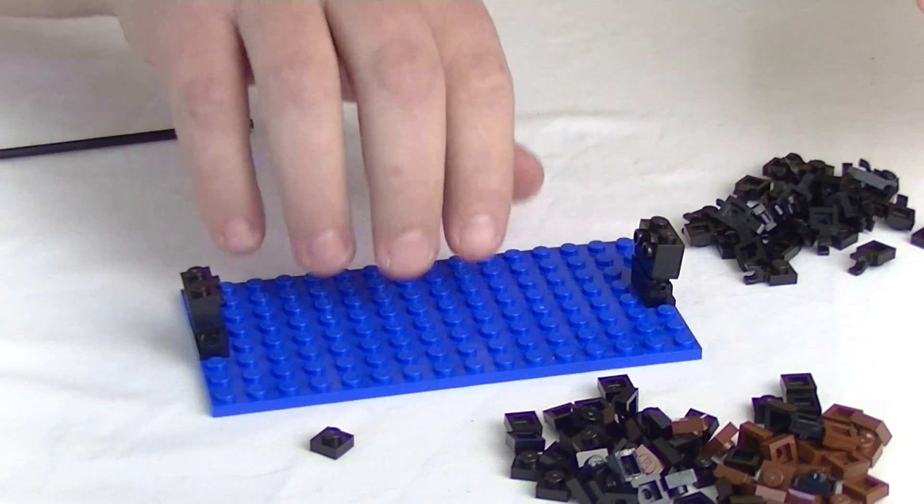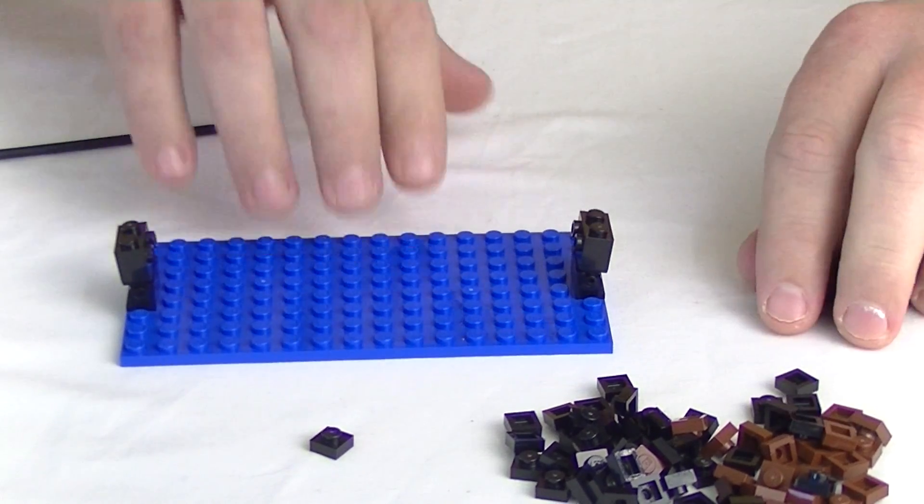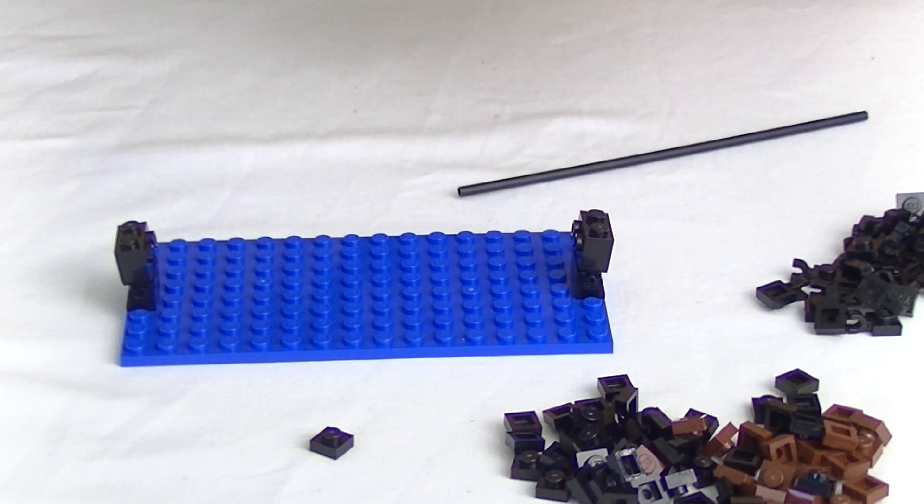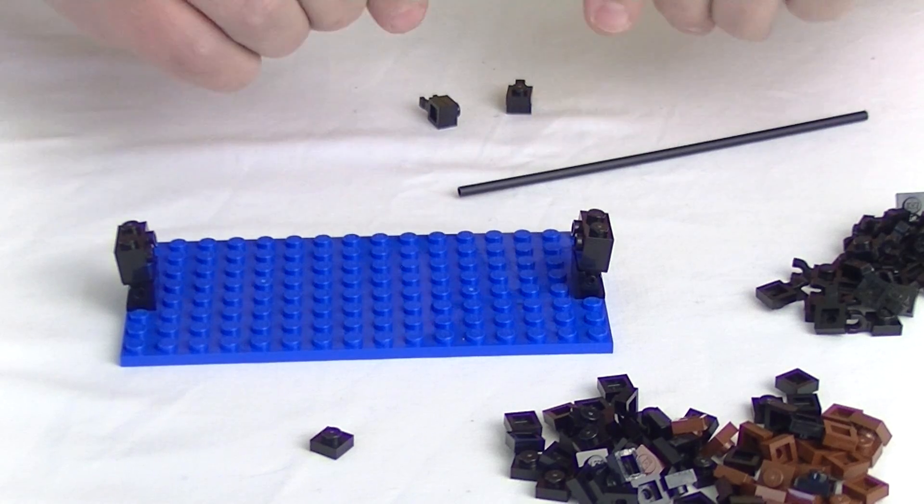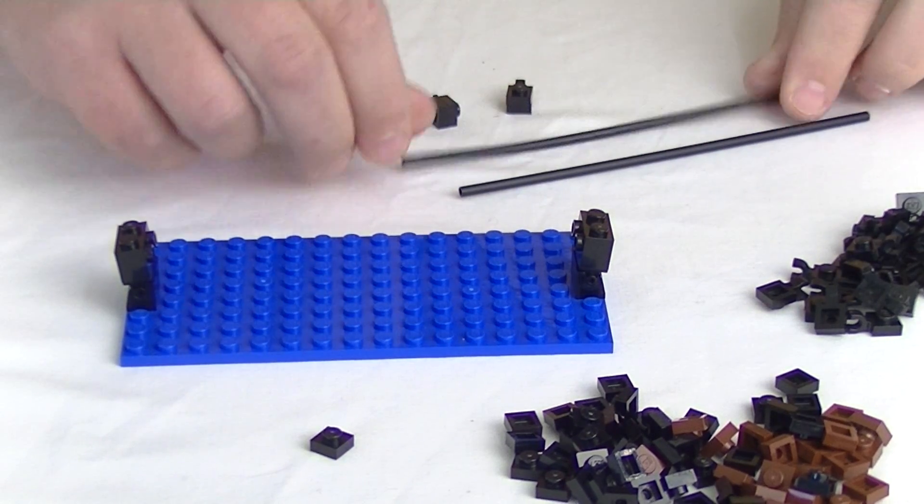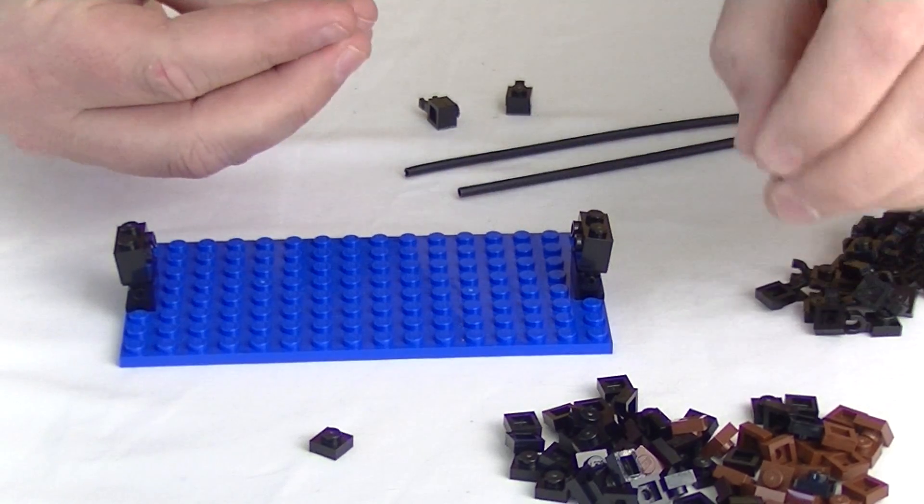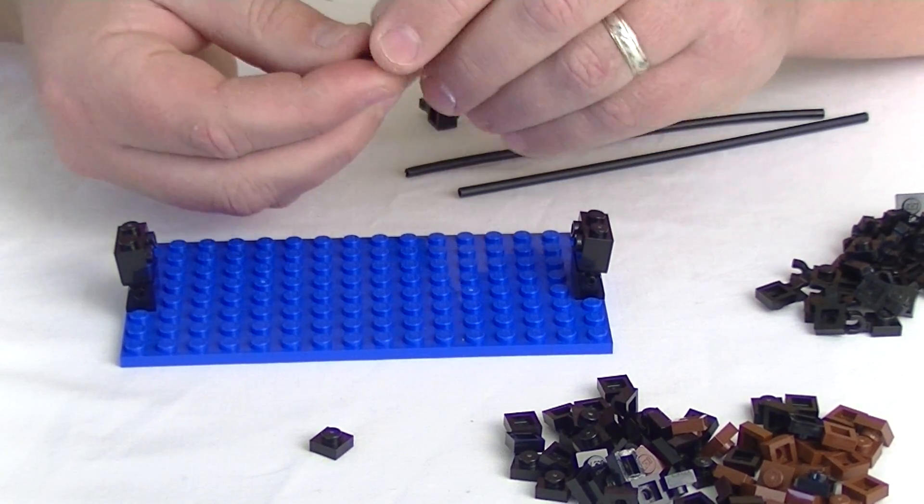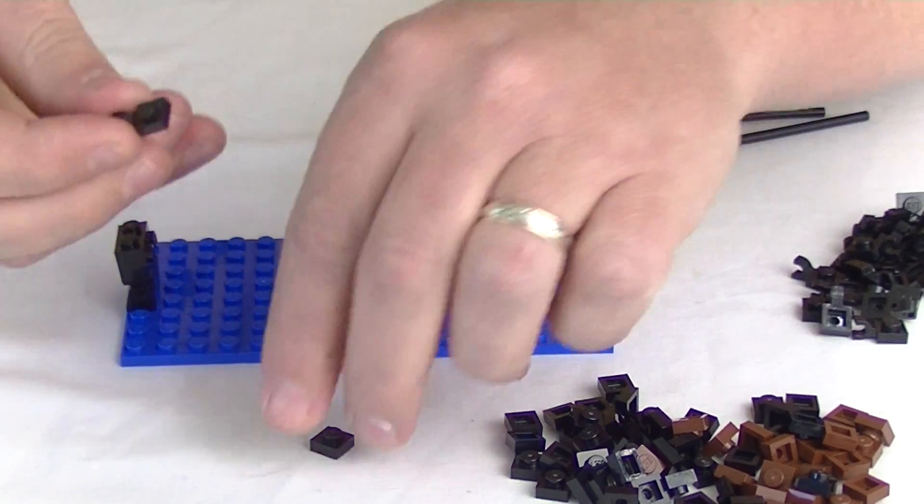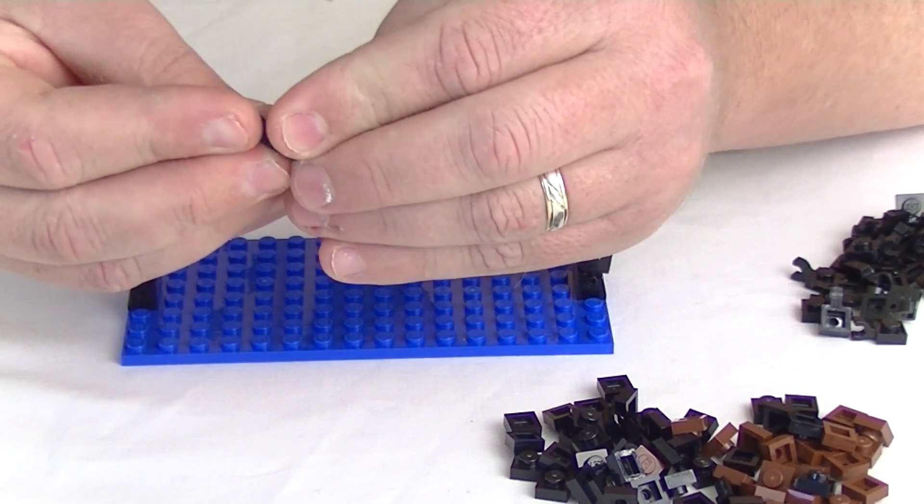Alrighty, so first of all I'm going to get my two pieces of hose. Just going to try and straighten this one out a little bit. And you need to put your plates on top of the clips here, just like that. Now for this distance that I'm doing here, it's 16 per side.